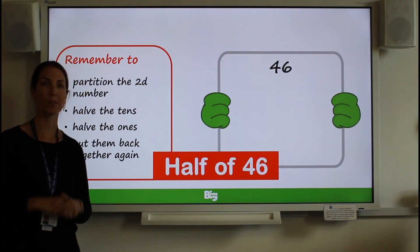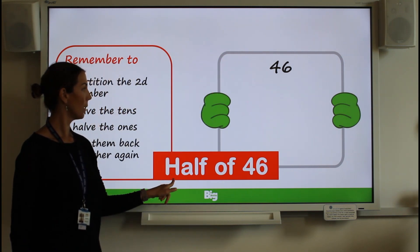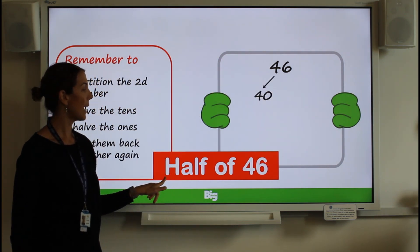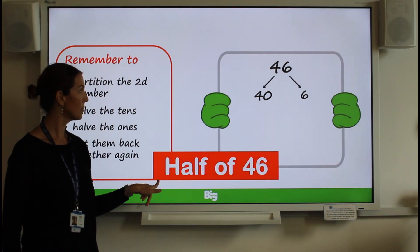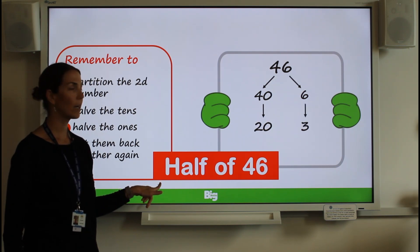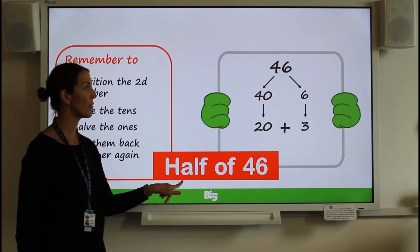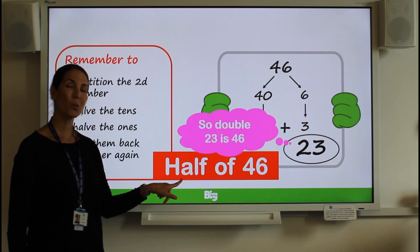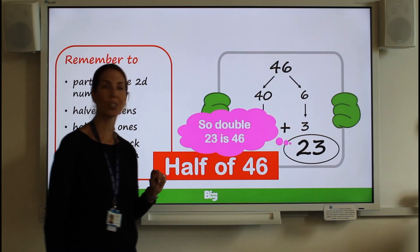Half of 46. I'm going to start with my 46 at the top. I'm going to partition it into my 40 and into my six. Then I'm going to half my tens and I'll get 20. And I'm going to half my six and I'm going to get three. And then at the end, I'm going to put it back together again. But I also know that if I double my 23, I'll get my original answer 46.